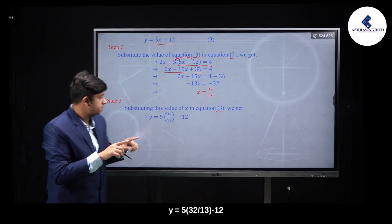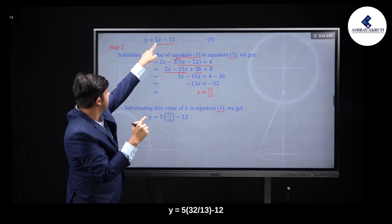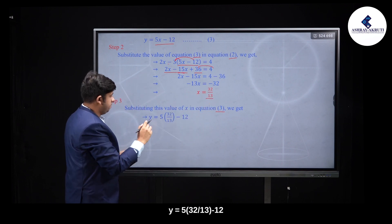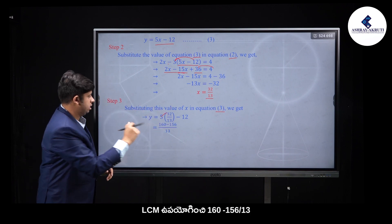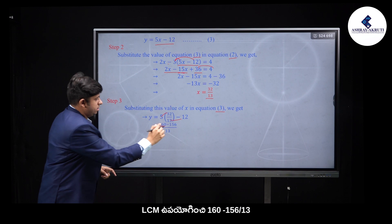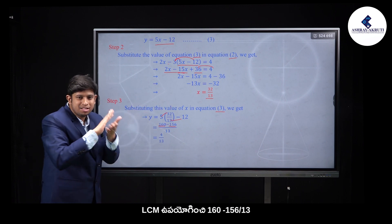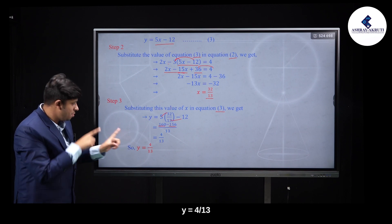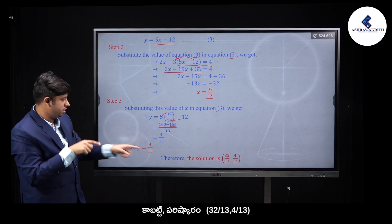Substituting x = 32/13 into equation 3: y is equal to 5 into (32 by 13) minus 12. Taking LCM: 160 minus 156 by 13. Finally, y is equal to 4 by 13. Therefore the solution is x = 32/13, y = 4/13.